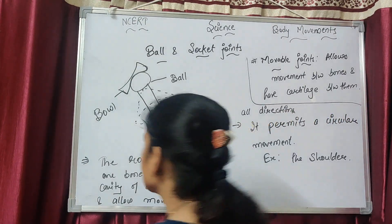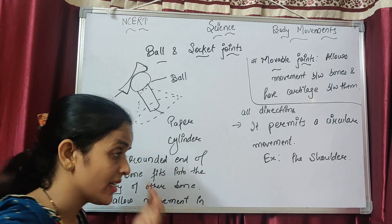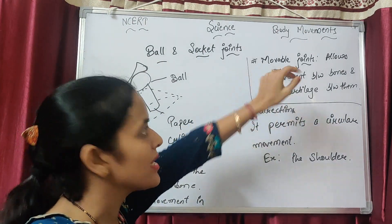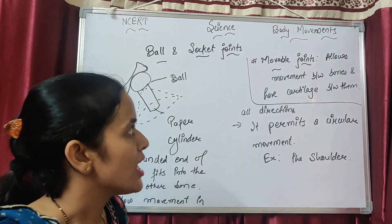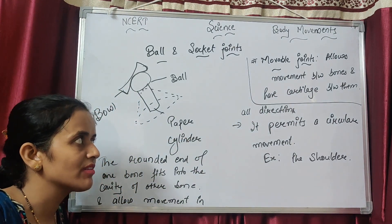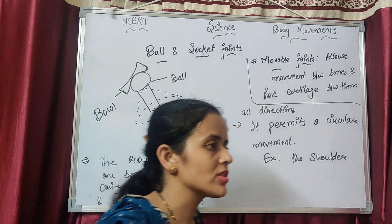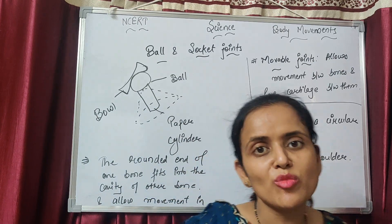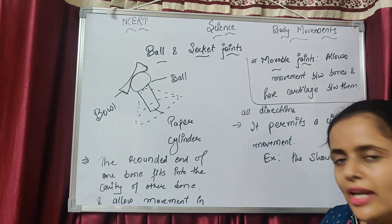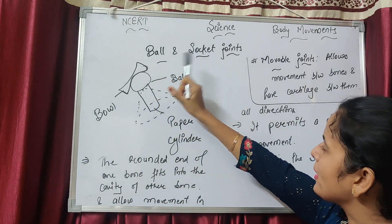Yesterday we finished up to joints. So today we will discuss the types of joints. The first point: movable joints allow movement between bones and have cartilage between them. The joints which allow movement between bones are called movable joints.